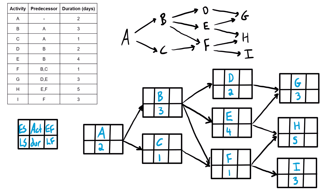With that set up, we're ready to start the forward pass. We start with the initial activity A at an early start of zero, add the duration of two, giving an early finish of two. That early finish feeds into the early starts of B and C, both receiving a two. Two plus three gives B an early finish of five; two plus one gives C an early finish of three. Activity D gets an early start of five from B. Activity E also gets five. For F, we have two competing values — five from B or three from C — and we take the larger, so five. Adding durations: five plus two is seven for D, five plus four is nine for E, and five plus one is six for F.